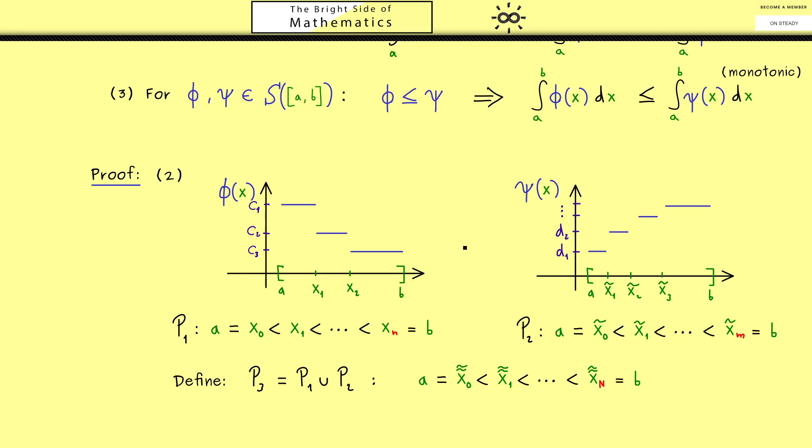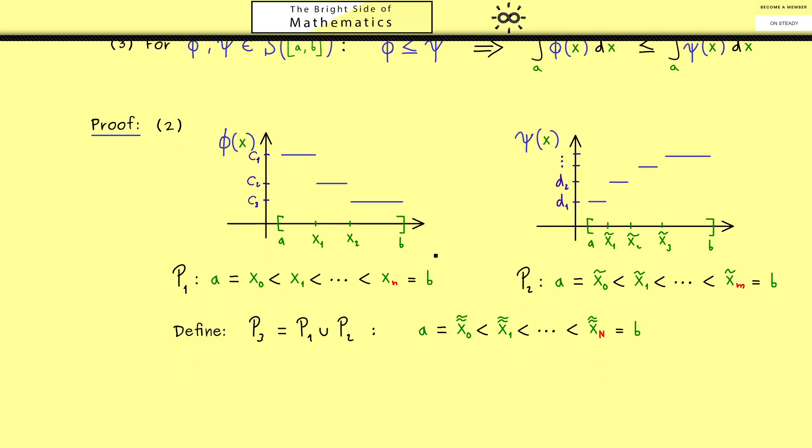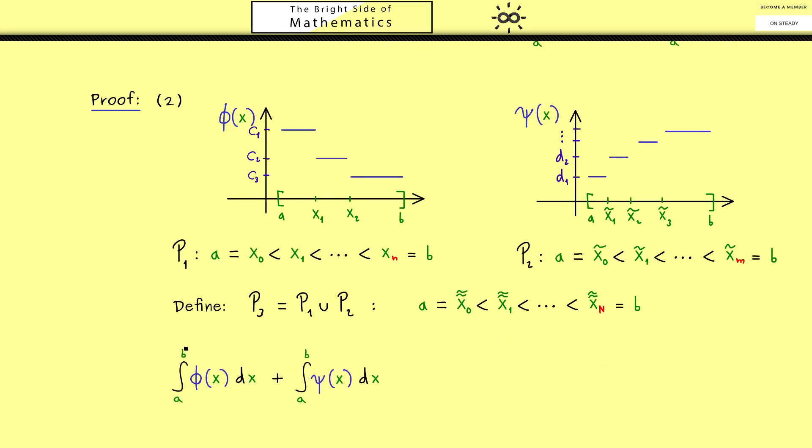With this we are able to combine both integrals. We can calculate this and this integral with P₃, and then adding shouldn't be a problem. As an additional remark, you should note that now I use capital N to denote the number of points in the partition. In general we would have more points than before, but for the calculation it does not matter how many we have.